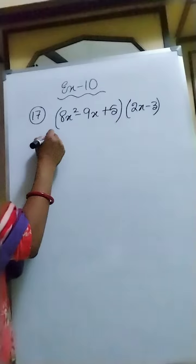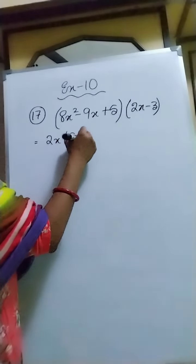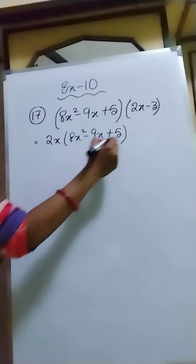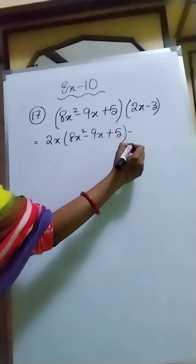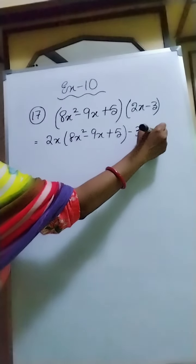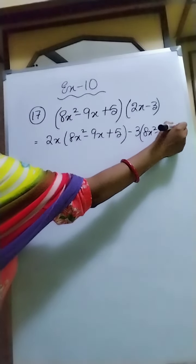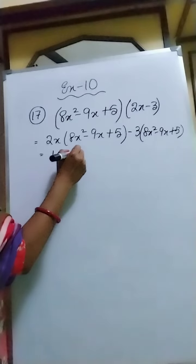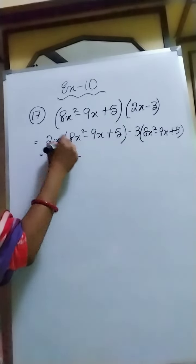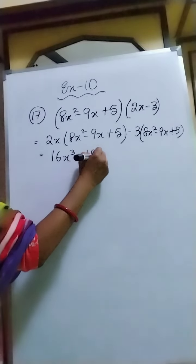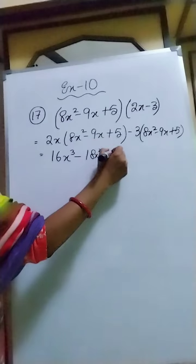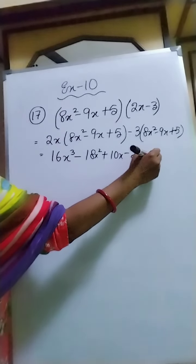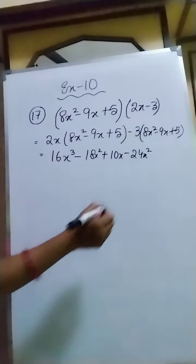So now we will multiply this. First we will multiply 2x with these terms and then minus 3 with these. So in the next step we will multiply 2x with 8x squared minus 9x plus 5, and then minus 3 also we will multiply with 8x squared minus 9x plus 5.